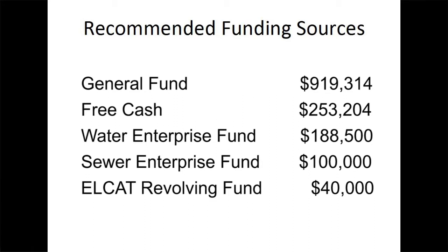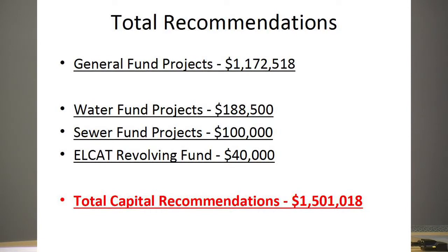Our recommended funding sources are: from the General Fund, $919,314 raised and appropriated; $253,204 from free cash; from the Water Enterprise Fund, $188,500; from the Sewer Enterprise Fund, $100,000; and from the LCAT Revolving Fund, $40,000. General Fund projects total $1,172,518. Including the Water Enterprise Fund, Sewer Enterprise Fund, and LCAT Revolving Fund, our total recommendation to the Town of East Longmeadow this year is $1,501,018.